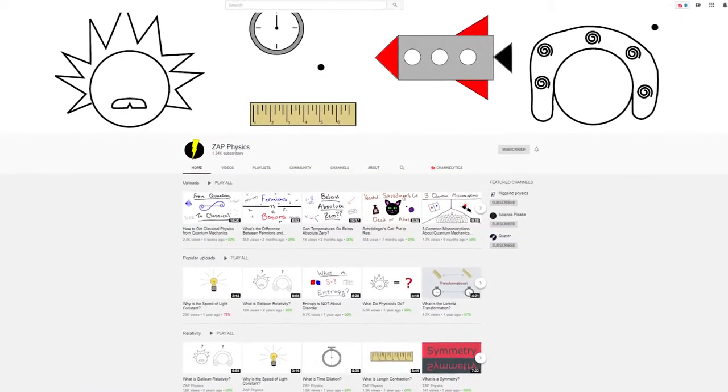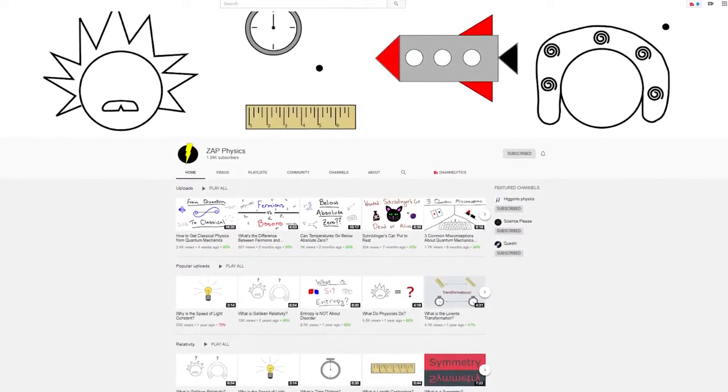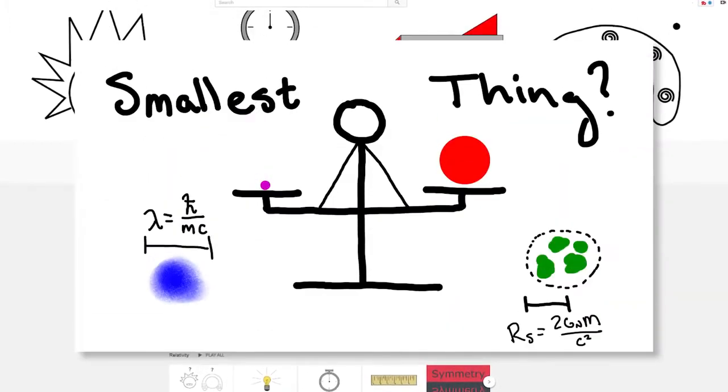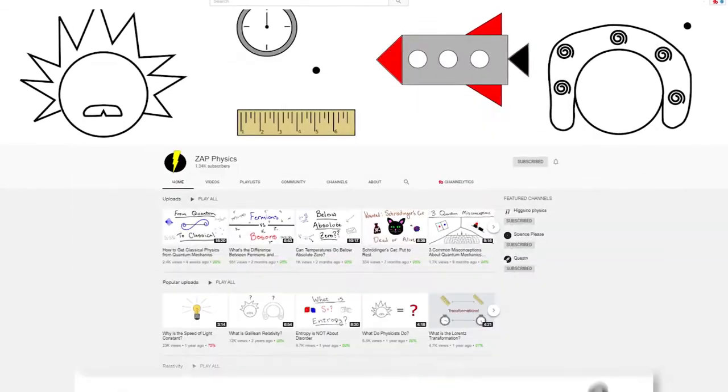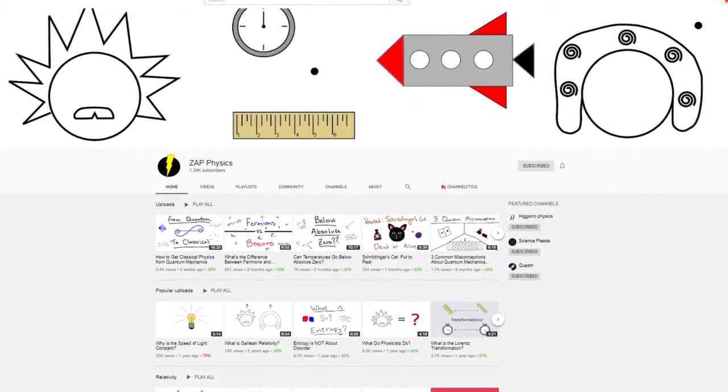Before I roll the intro, I just wanted to let you guys know that this video is part of a collab with Zap Physics. After you find out about the largest objects in our universe, make sure to jump over to his channel and check out the smallest. Be sure to let us know what you think of the video down in the comment section below. The analytics really help us with smaller channels, and let's jump in.